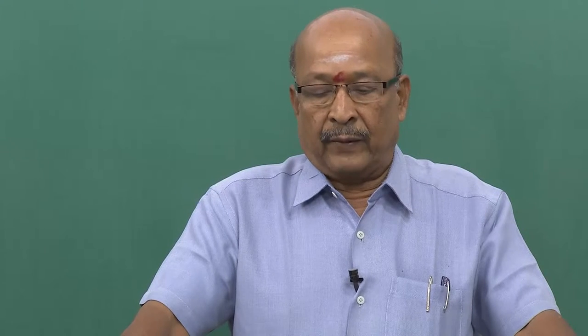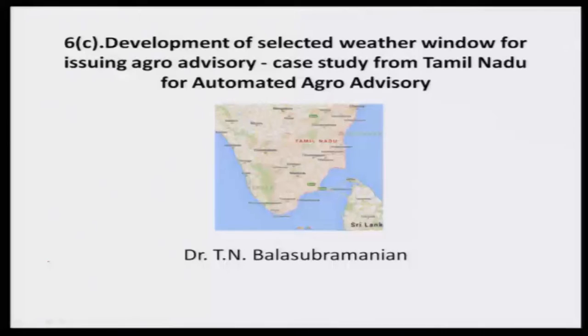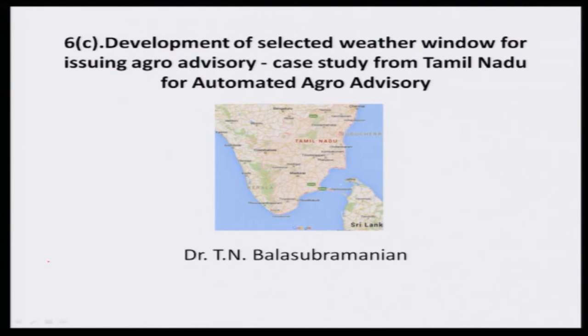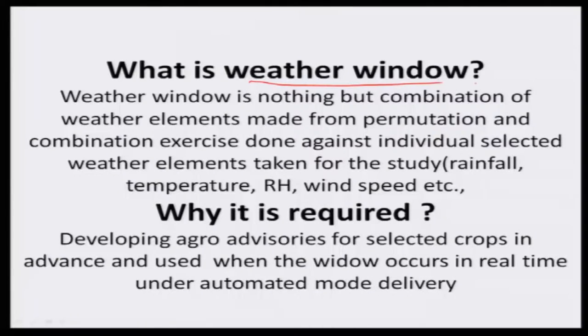Before that, we have to do some exercise. That means we have to learn about selected weather windows, which is highly useful for the preparation of agro advisories on computer mode. You may ask: what is a weather window? The weather window is defined as nothing but a combination of weather elements with threshold levels. For example, if you take rainfall — 0, or 15 millimeters, or 40 millimeters — some threshold levels from a permutation and combination exercise done against individual selected weather elements.